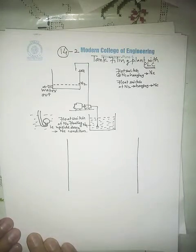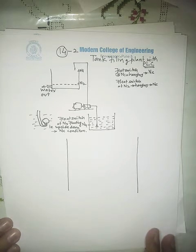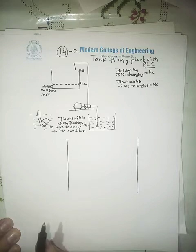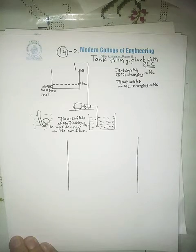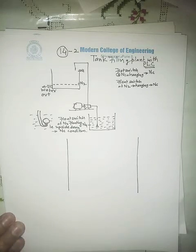This is part 2 of lecture number 14. In my previous video, the audio got switched off, so that video is without audio. I am repeating that lecture again. Here I will take the problem of an automatic tank filling plant with PLC, but without using an SR flip-flop — using simple relay logic. This solution without the SR block is not in any book, so please be attentive.